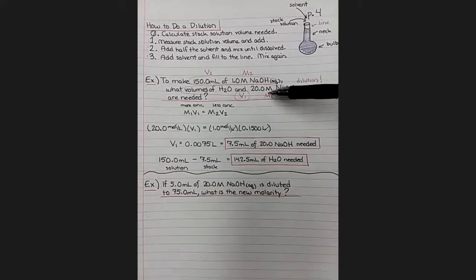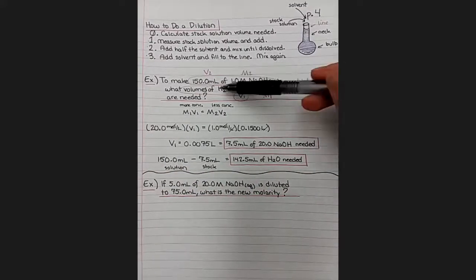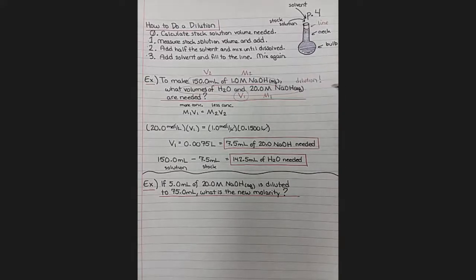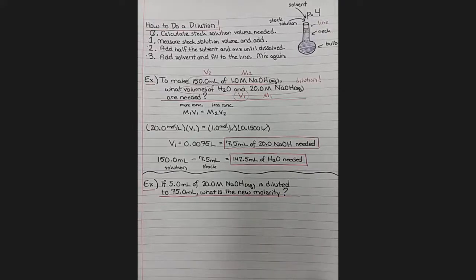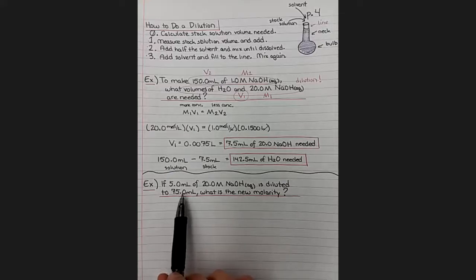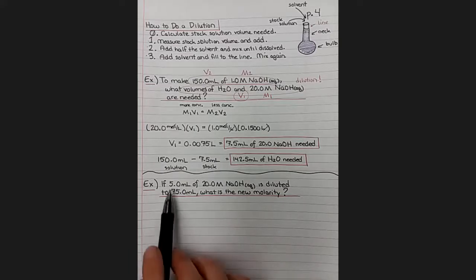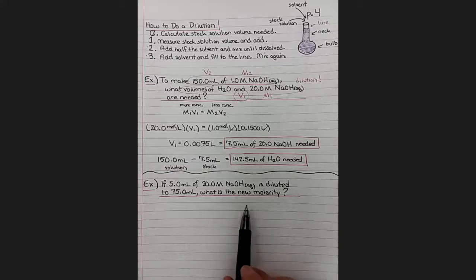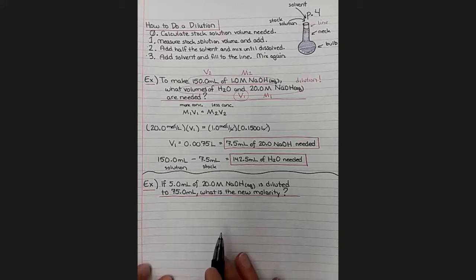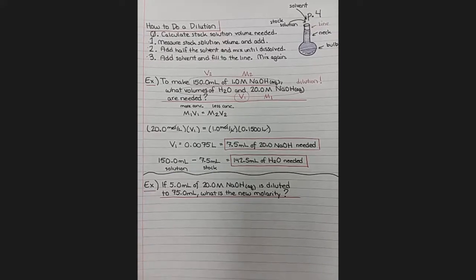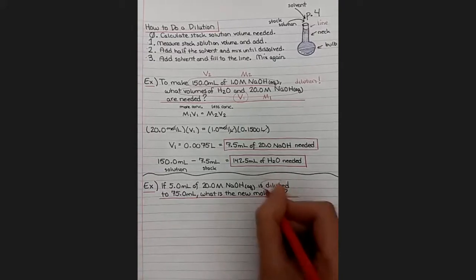So in this problem, we went from, we tried to solve for how much volume of stock solution we needed. Sometimes we need to use the equation going the other direction. Sometimes we need to solve for a molarity. So in this next example, it says if 5 milliliters of 20 molar sodium hydroxide stock is diluted to 75 milliliters, which again, we recommended only to do for small volumes, what is the new molarity of that solution that we made?